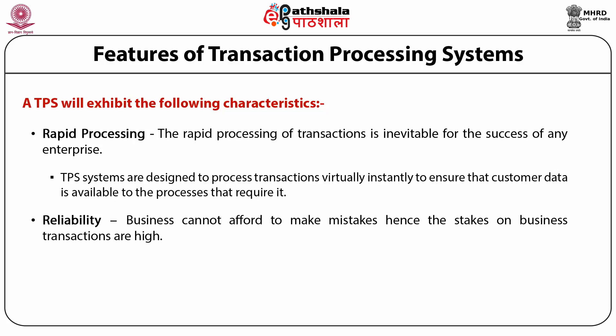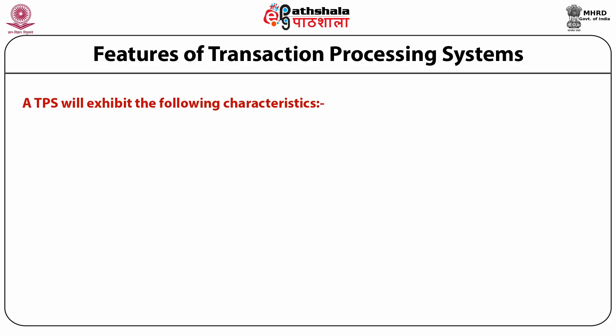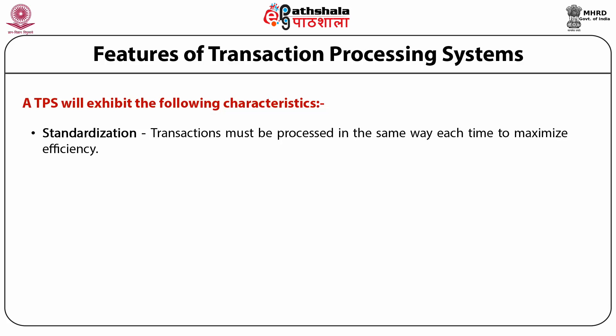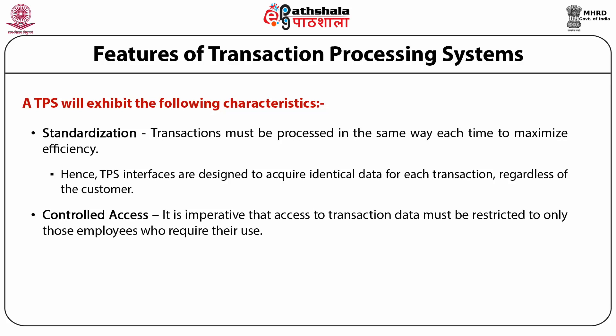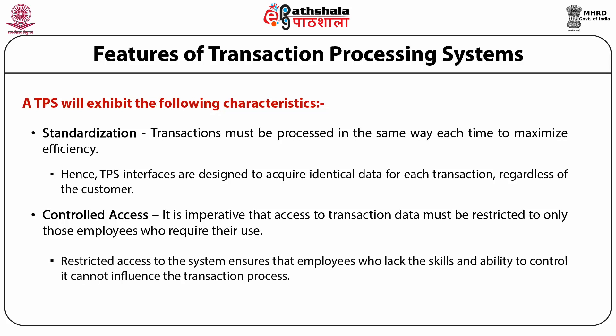The second characteristic is reliability. Businesses cannot afford to make mistakes; hence the stakes on business transactions are high. TPS systems are therefore designed to incorporate comprehensive safeguards and disaster recovery systems, keeping the failure rate well within tolerable levels. Third is standardization. Transactions must be processed in the same way each time to maximize efficiency; hence TPS interfaces are designed to acquire identical data for each transaction regardless of customer. Lastly, controlled access. It is imperative that access to transaction data be restricted to only those employees who require it. Restricted access ensures that employees who lack the skills and ability to control the system cannot influence the transaction process.